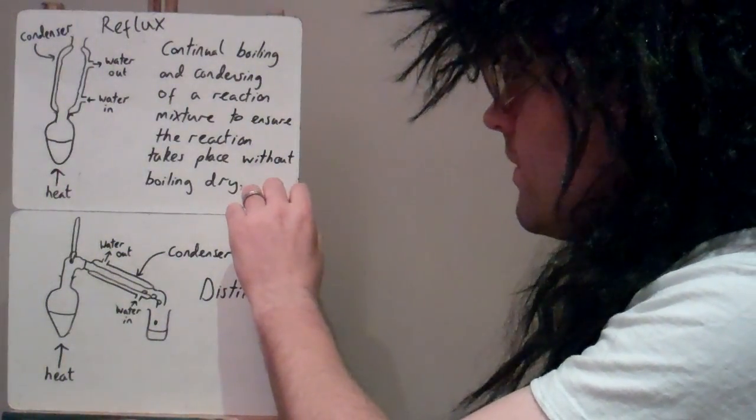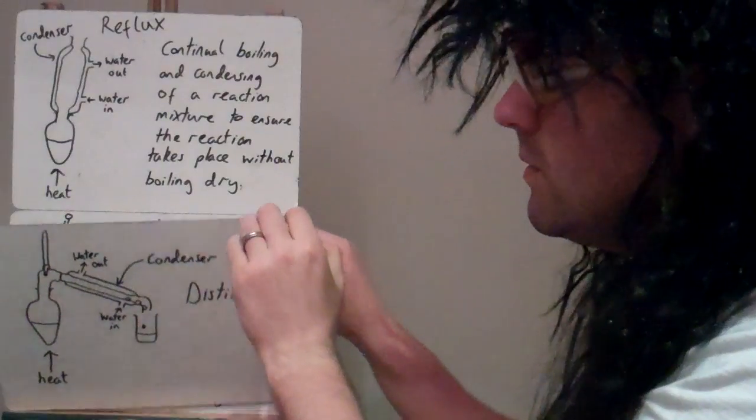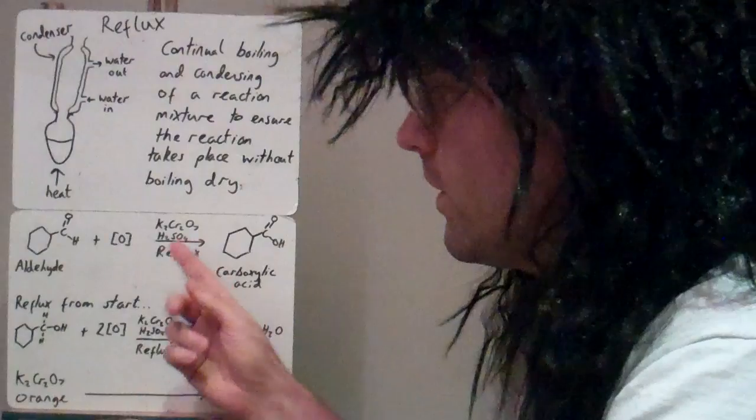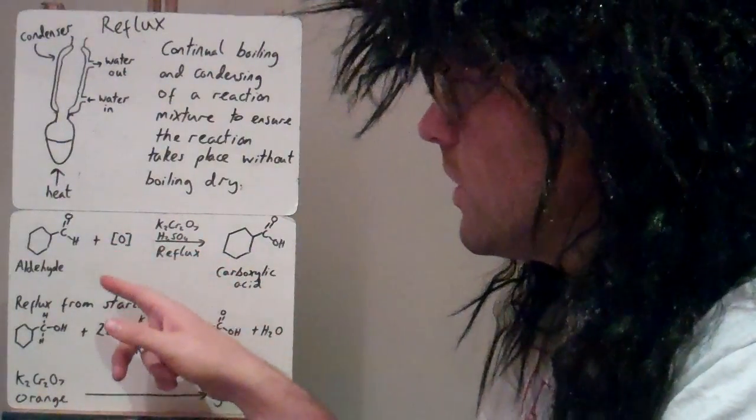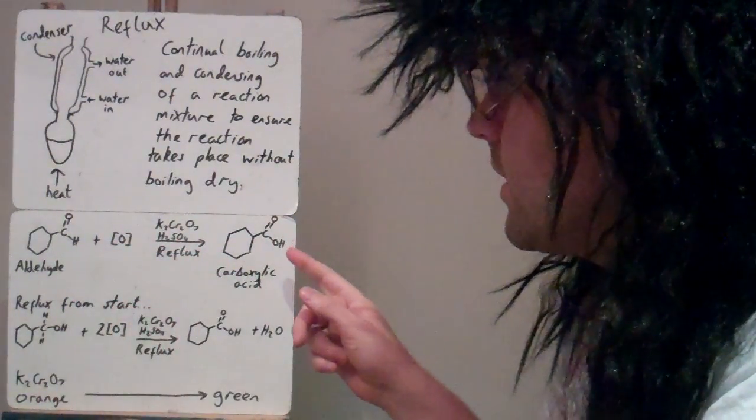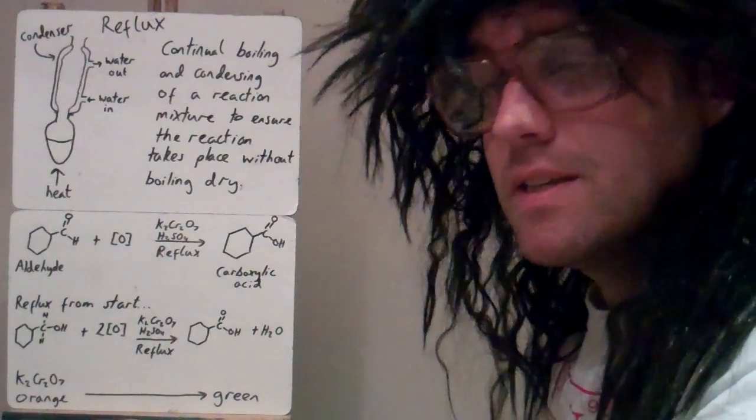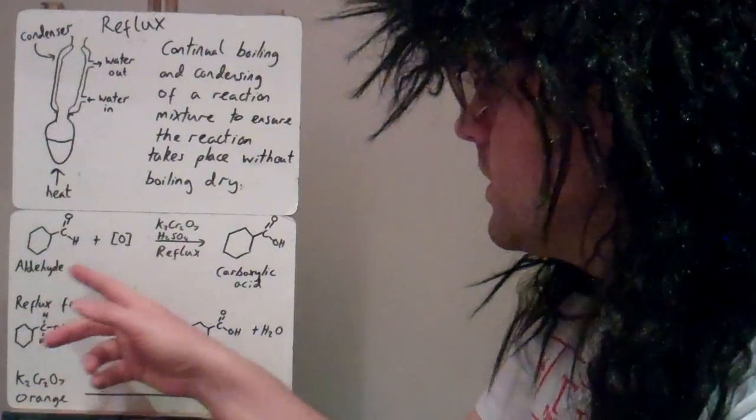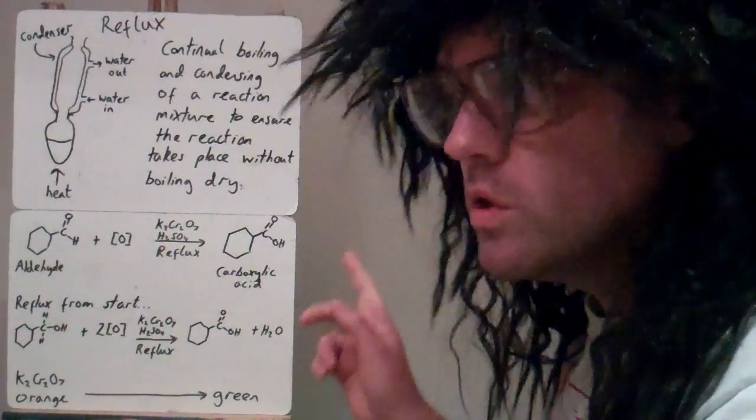So if we took that aldehyde, that aldehyde was refluxed, again potassium dichromate, acidified conditions, we put the oxidizing agent in there with it and we make a carboxylic acid this time. So the aldehyde has gone to carboxylic acid. Now there's no water produced in this reaction.